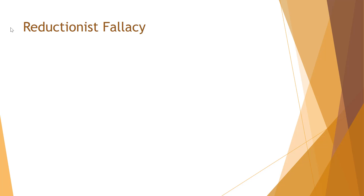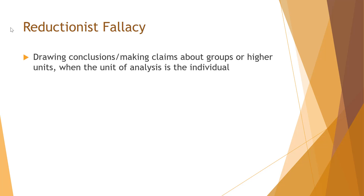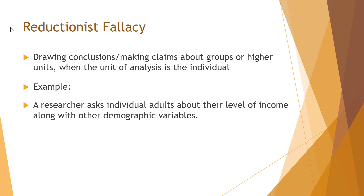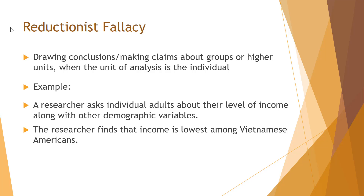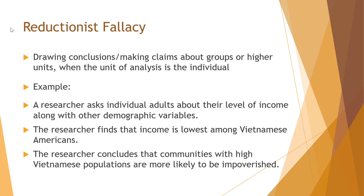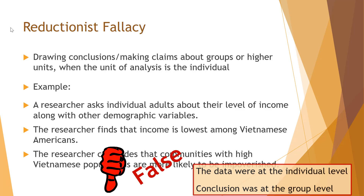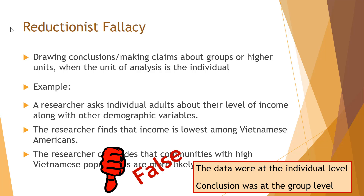The reductionist fallacy is the opposite: drawing conclusions about groups when the unit of analysis is the individual. For example, a researcher asks individual adults about their income and other demographic variables — all data at the individual level. The researcher finds that income is lowest among Vietnamese Americans and then concludes that communities with high Vietnamese populations are more likely to be impoverished. That conclusion is also false: the data were at the individual level, but the conclusion was drawn at the group level.